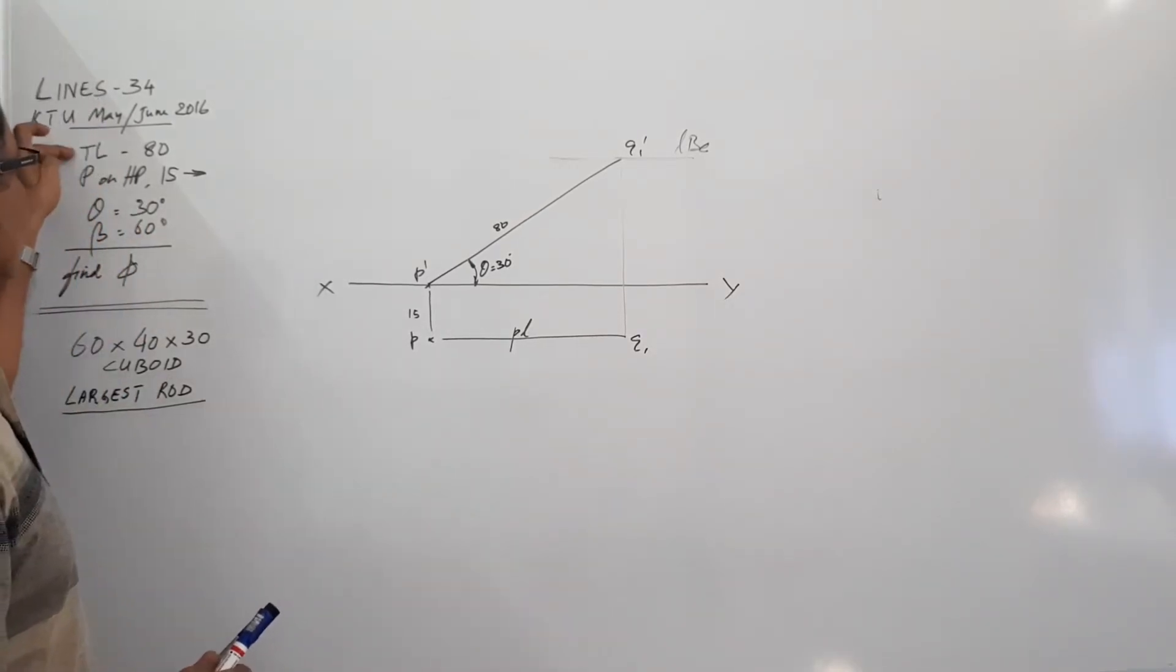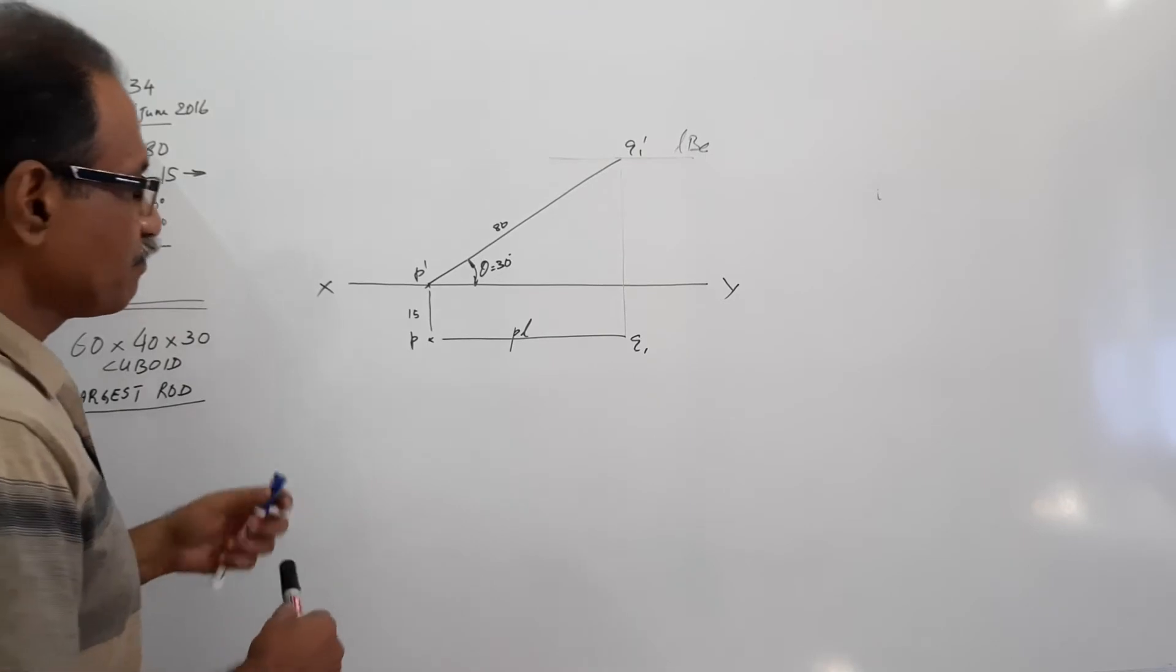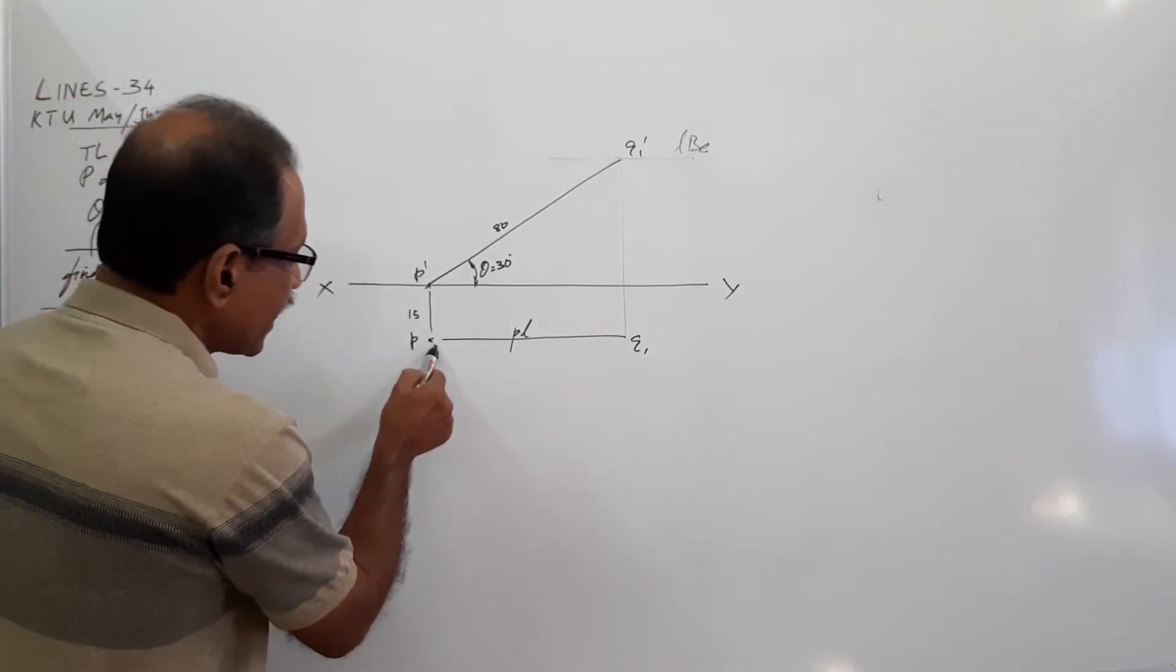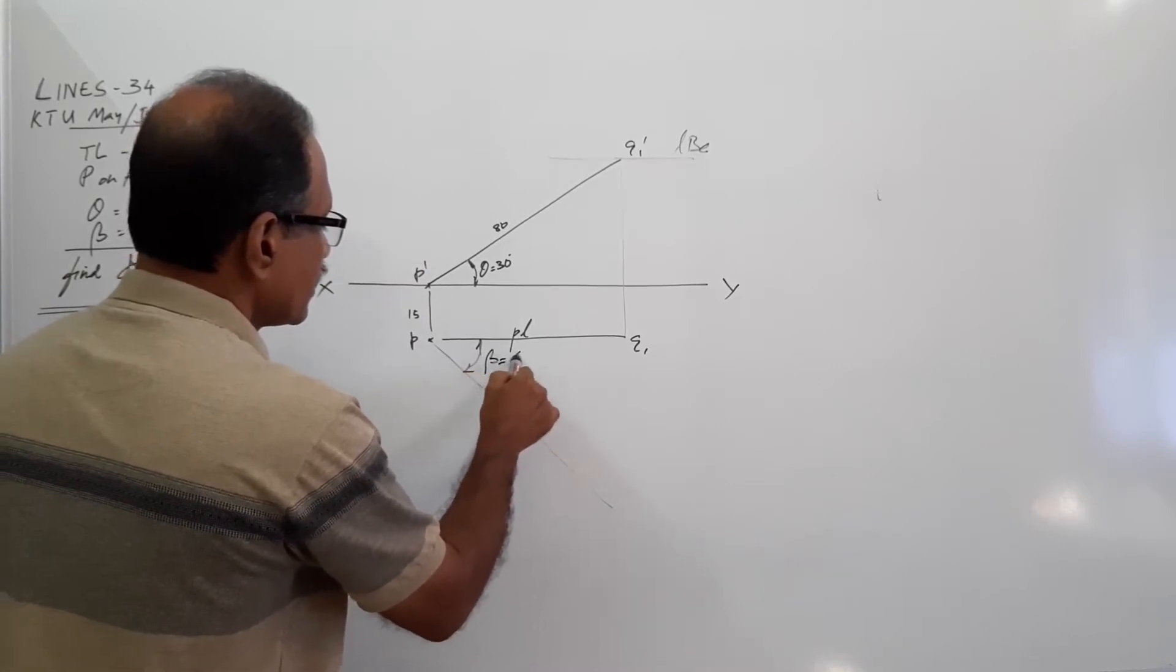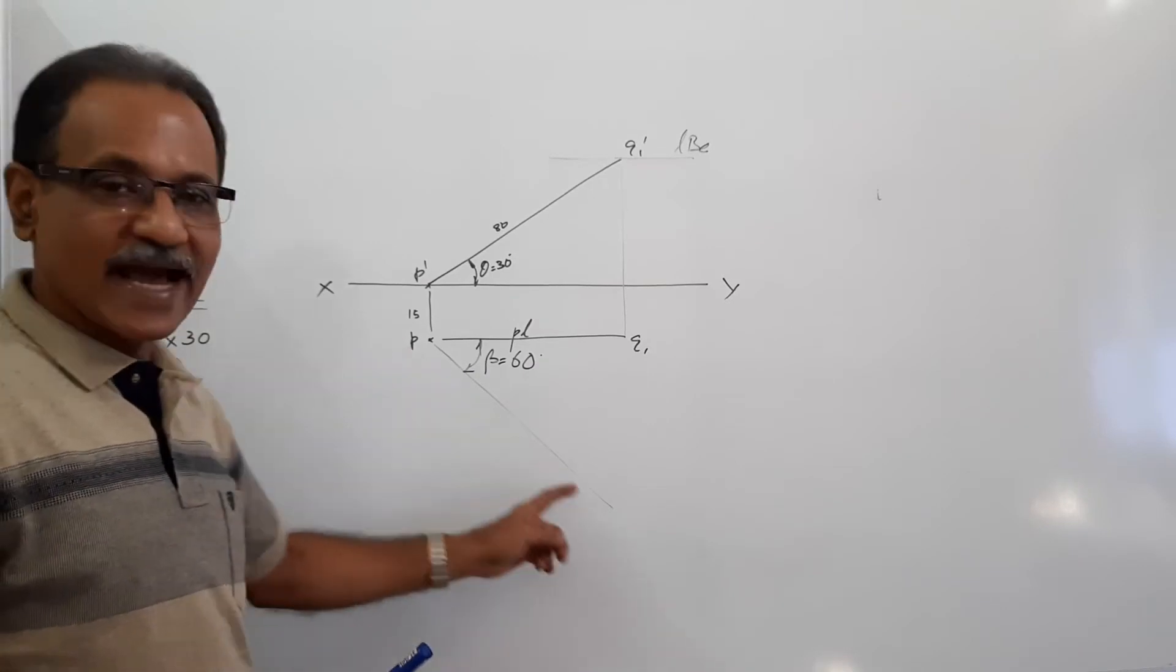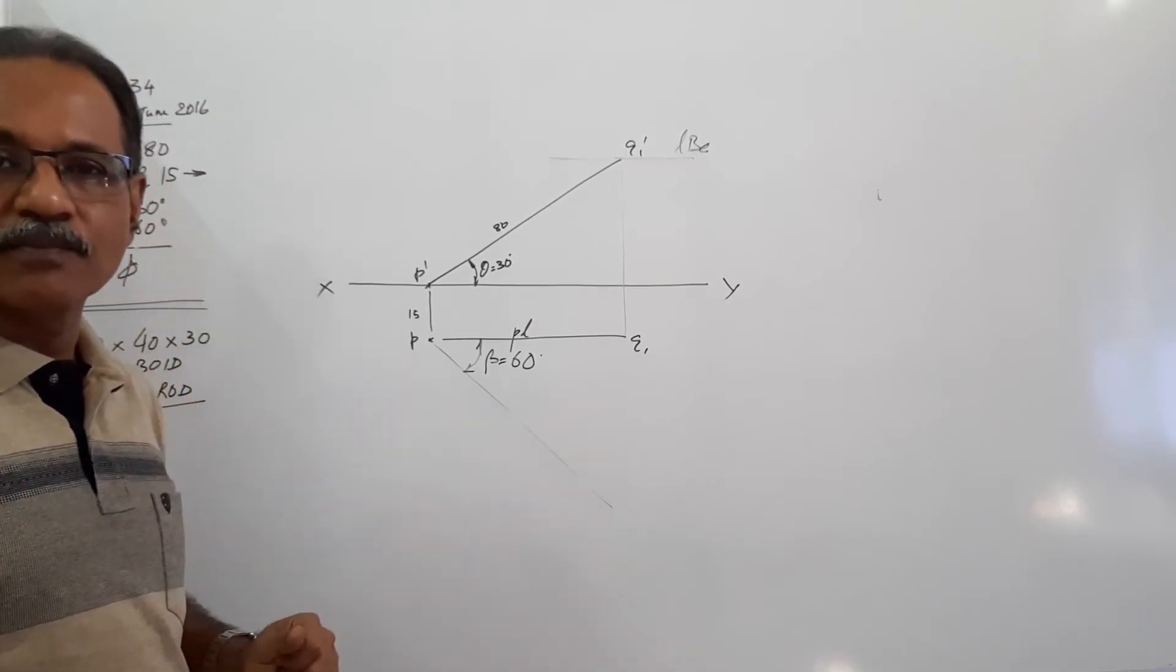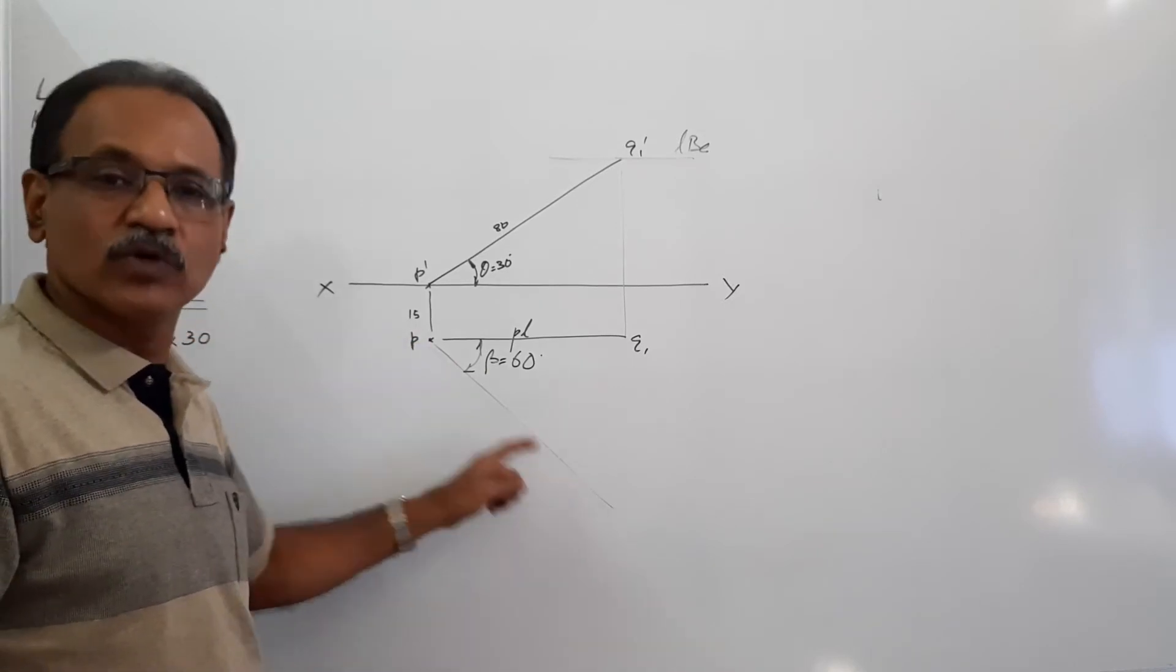Now, this is used, this is used, this is used. This is remaining, beta equals 60. At P, draw a line at beta equals 60. This line contains Q, the plan of end capital Q, or the plan PQ. It contains PQ.